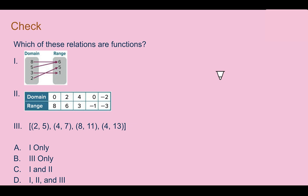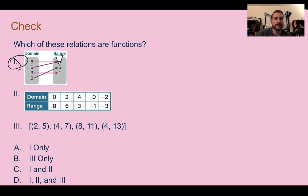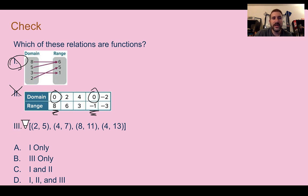Check your understanding: look through these three choices and determine which relations are functions. For number 1, 8 only goes to 6, 5 also goes to 6, 3 goes to 1, and 2 only goes to 5 — each thing in the domain has only one arrow, so number 1 is a function. Number 2 has a duplicate zero that goes to different things — not a function. Number 3 has 4 going to both 7 and 13 — not a function. Only number one is a function.